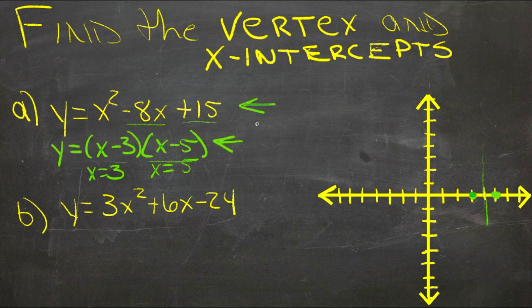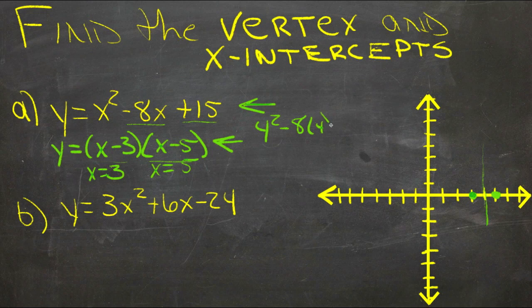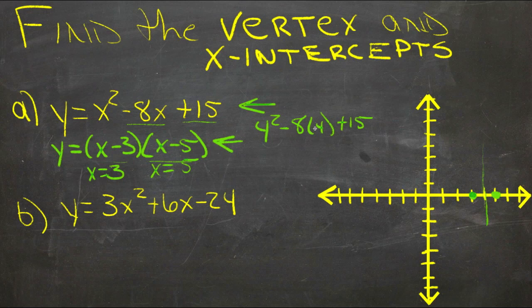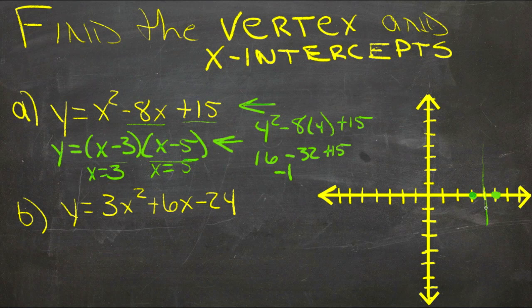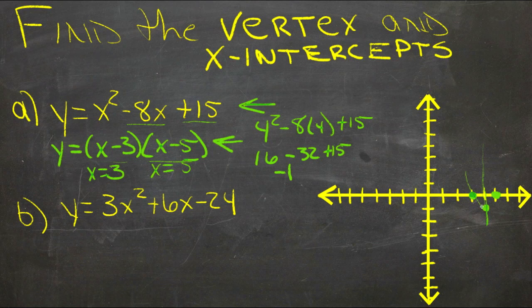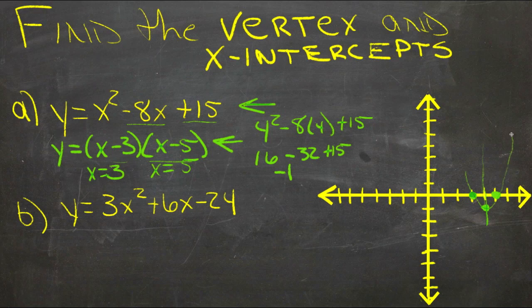We'd end up with 4 squared minus 8 times 4 plus 15. By plugging that 4 point in, 4 squared is 16 minus 32 plus 15. It comes out to be negative 1. Because that tells us there's a point at y is negative 1, x is 4. And that's our vertex, or the lowest point on this up-down parabola. So the parabola is going to do something like that, just a very rough sketch.